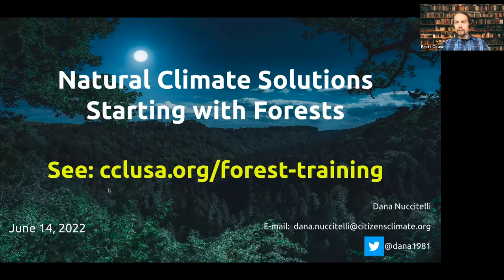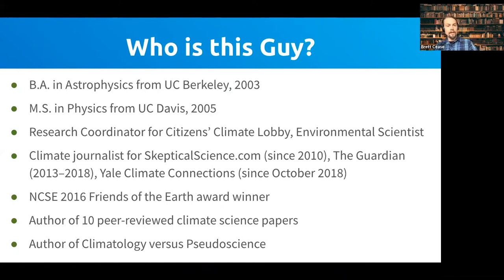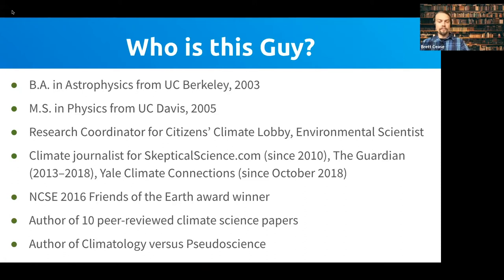Tonight's guest speaker is Dana Nuccitelli, an environmental scientist and climate journalist with a master's degree in physics. Dana has written about climate change since 2010 and was a frequent contributor to Skeptical Science. He now serves as CCL's research coordinator after nine years as a volunteer with the Sacramento chapter, and has given dozens of presentations around the country on climate impacts like wildfires, droughts, and policy solutions like carbon fee and dividend.